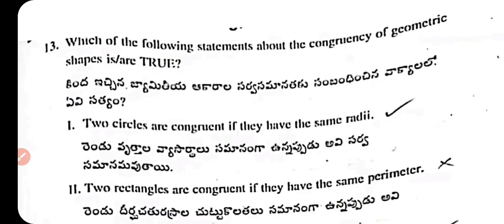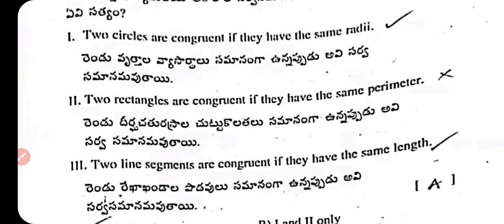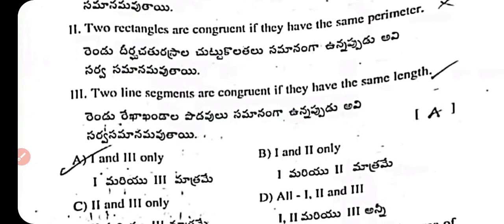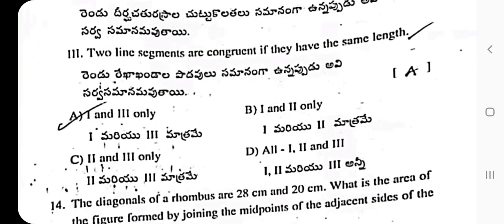Question 13: Which statements about congruency are true? Statement 1 — two circles are congruent if they have the same radius (true). Statement 2 — two rectangles are congruent if they have the same perimeter (false). Statement 3 — two line segments are congruent if they have the same length. The right answer is option A: only statements 1 and 3 are correct.